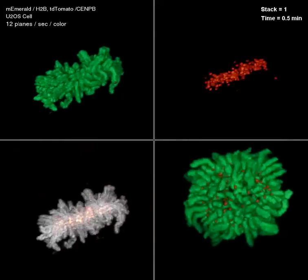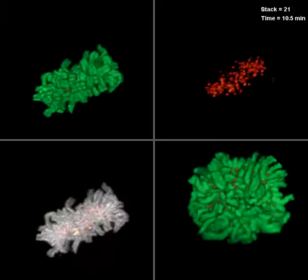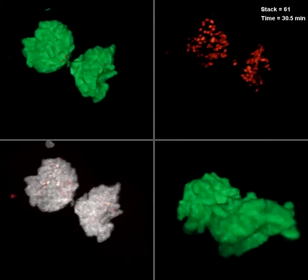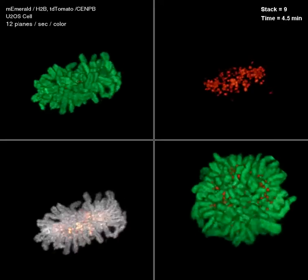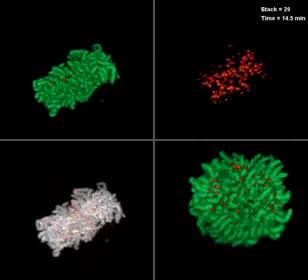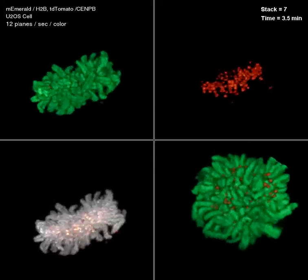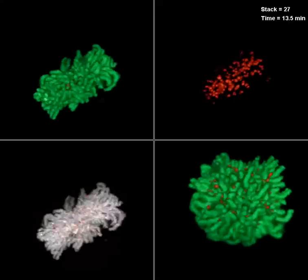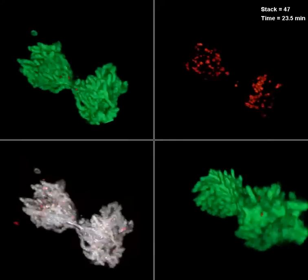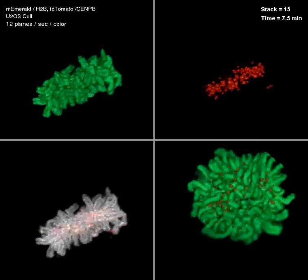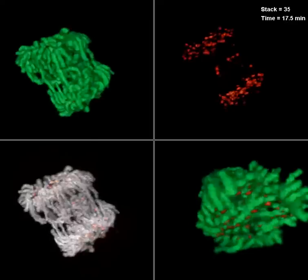And what you're seeing is the mitosis from the metaphase stage through anaphase and then telophase after the cell is divided into two daughter cells. The green is the chromosomes, and the red are the kinetochores, which act as the attachment points to which microtubules, these cytoskeletal members, come and pull apart the two chromatids.